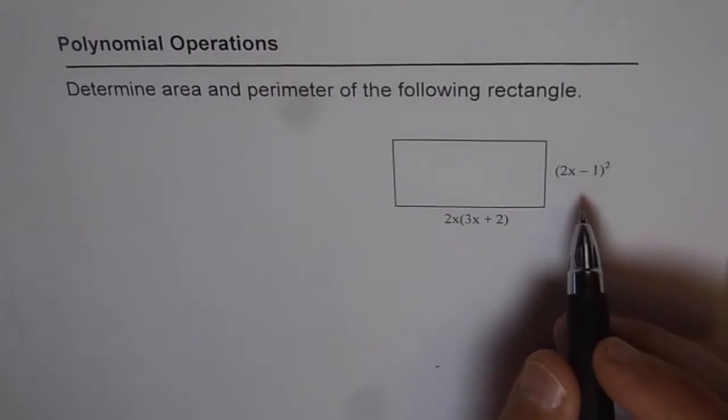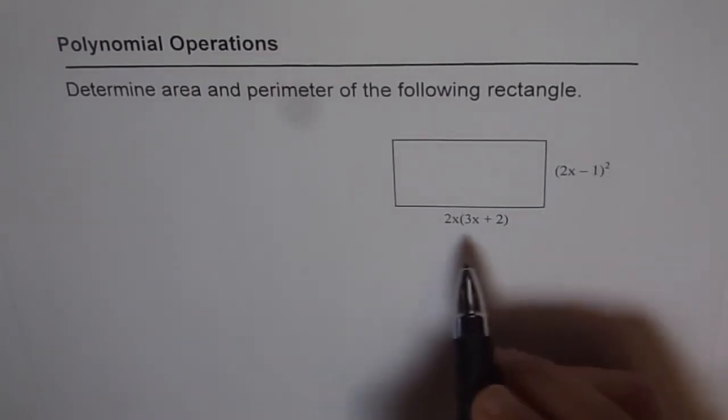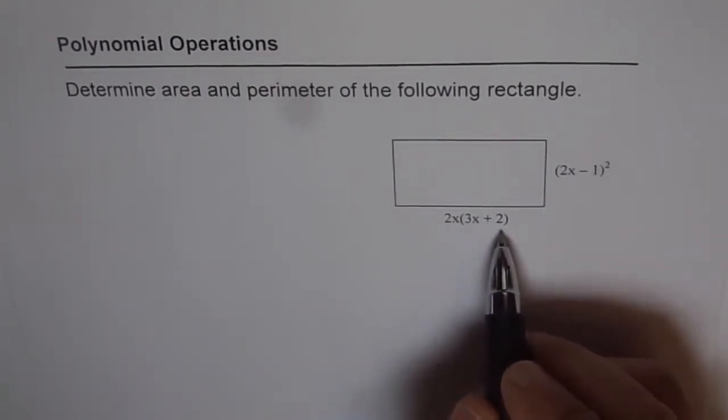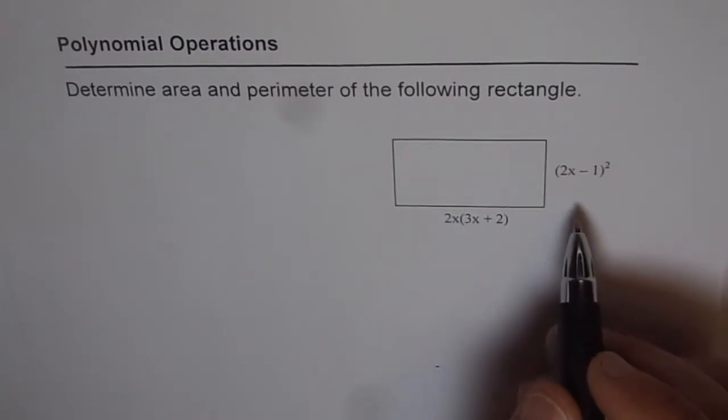We are given the sides of the rectangle as 2x minus 1 whole squared and 2x times 3x plus 2. Now let's first find the perimeter.